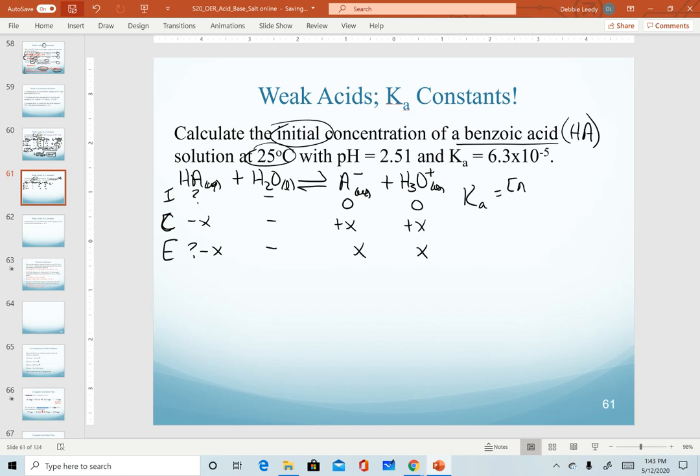We can set up our equilibrium expression as products over reactants. And we can plug in our numerical quantities set equal to our given Ka value. Now realize here we are given the pH. And so like we did in the previous problem, we can use that value to solve for the x.